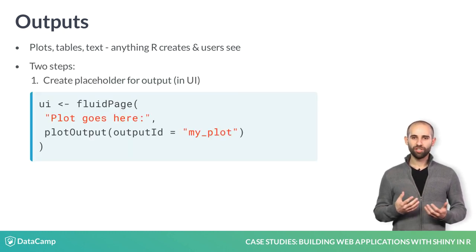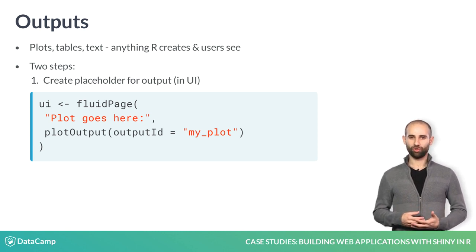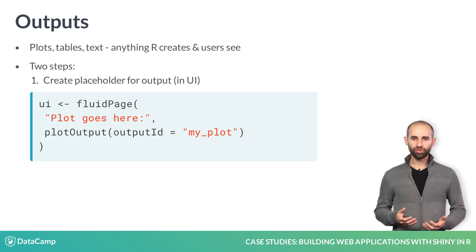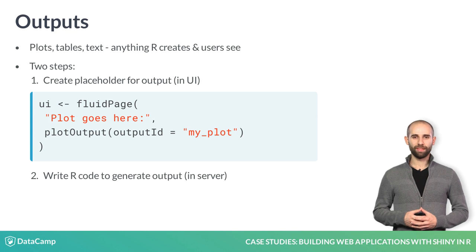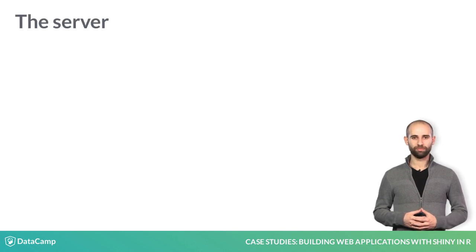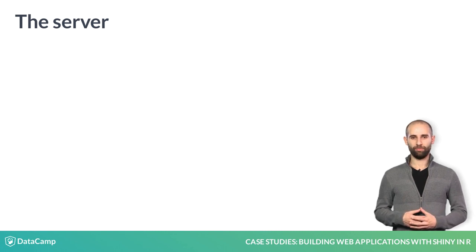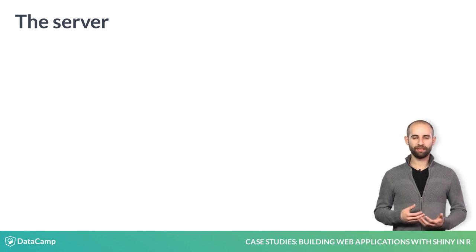First, you need to tell Shiny where to place the plot by adding an output placeholder in the UI. Similar to input functions, output placeholder functions also have an output ID parameter that must be unique. Creating inputs and output placeholders is entirely done in the user interface.